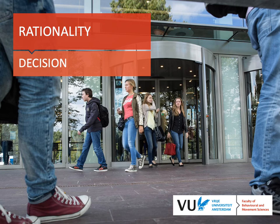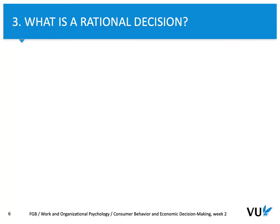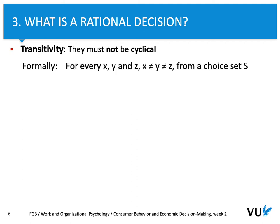So let's think — what does it mean to make a rational decision? First of all, one of the most important elements of rational decision is transitivity. Basically, it means that a rational decision must not be cyclical. So if we have a choice set S that consists of three options X, Y, and Z, none of them can be the same — X is different than Y, Y is different than Z, and that implies Z is different than X.